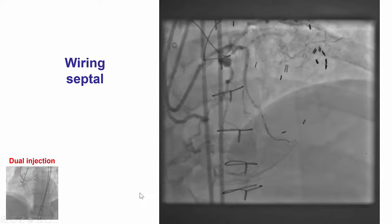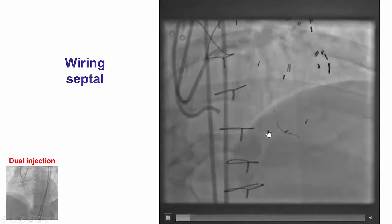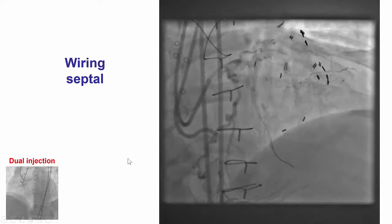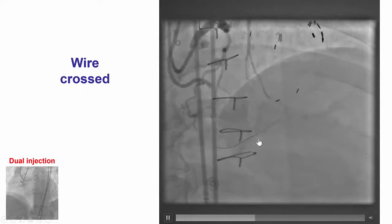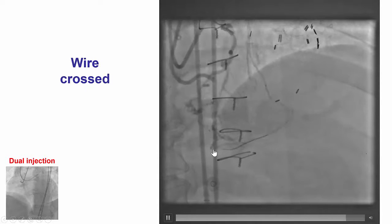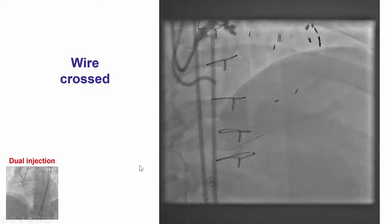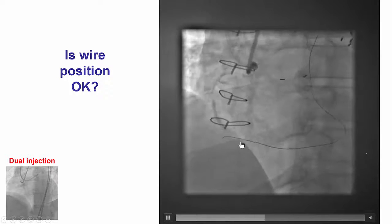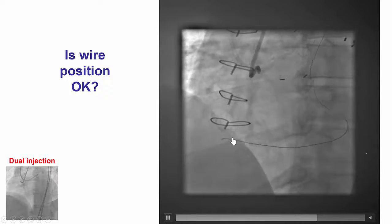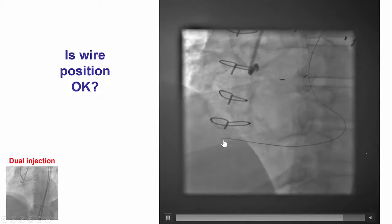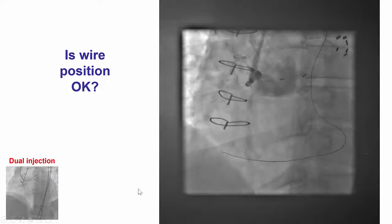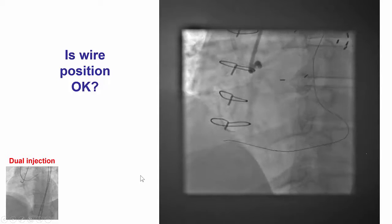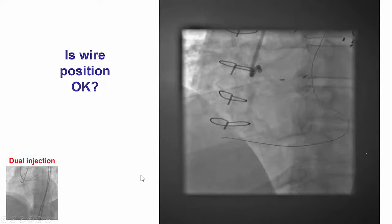The septal collateral was engaged with the Finecross microcatheter. Crossing was attempted with a Fielder FC guide wire and was successful in advancing the guide wire to the posterior descending artery. The Finecross subsequently followed easily. However, significant difficulty was encountered advancing the guide wire further up at the distal cap, despite using multiple guide wires, including the Fielder XT and Pilot 200.